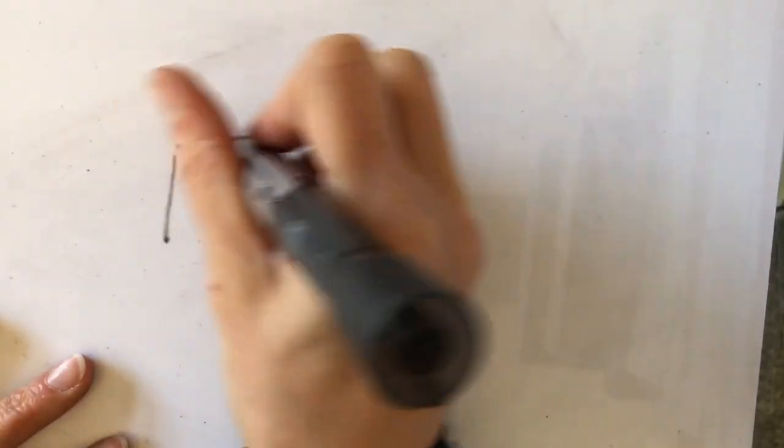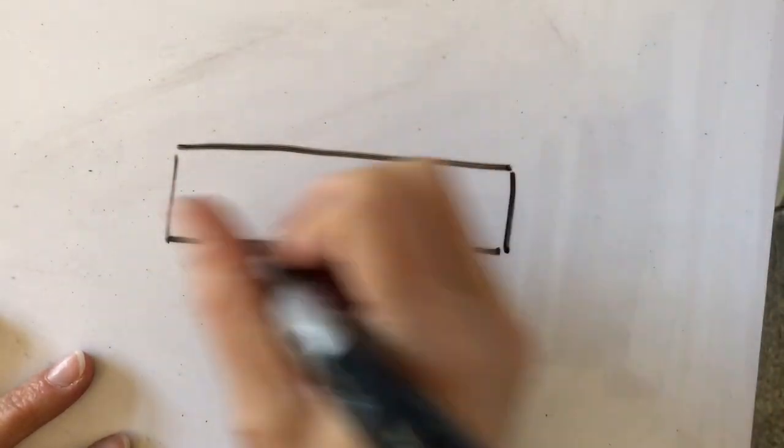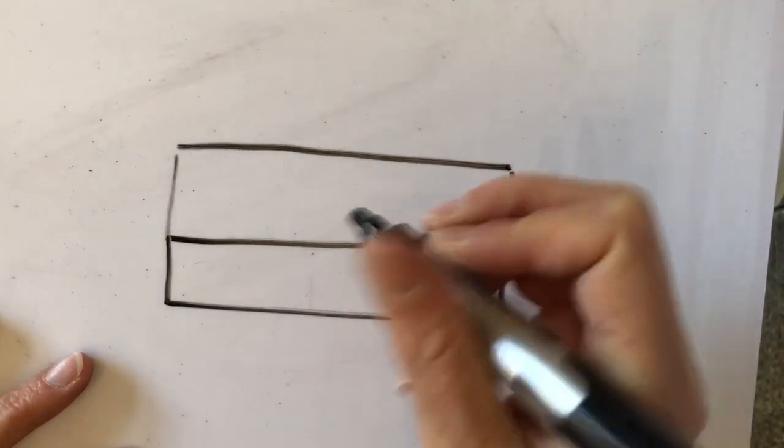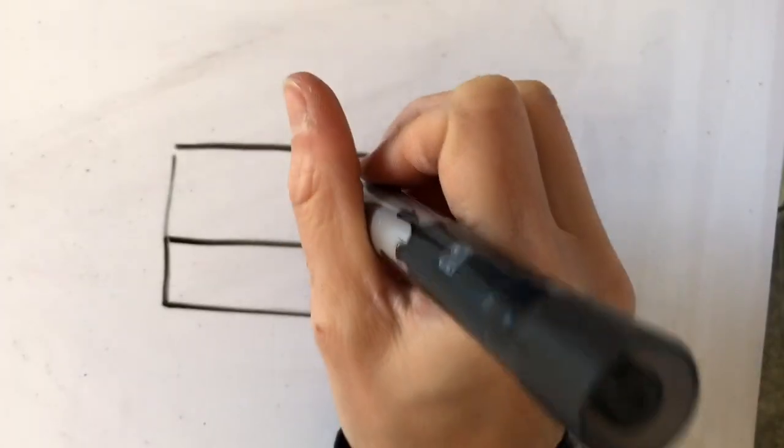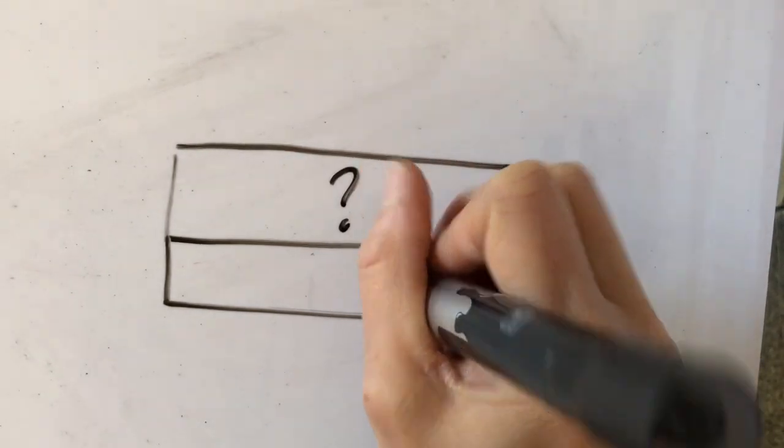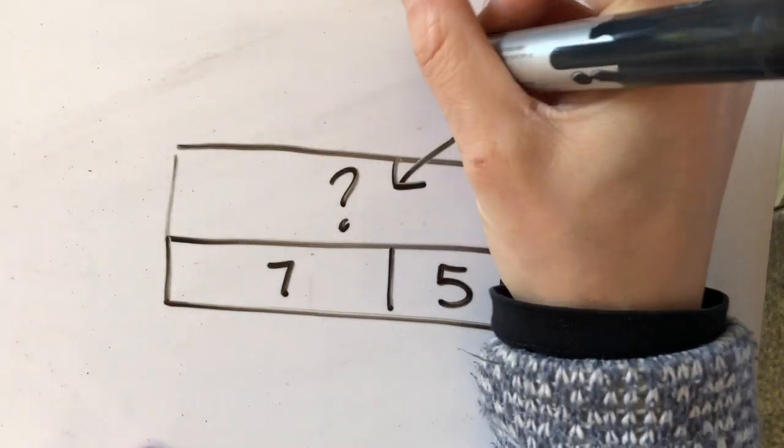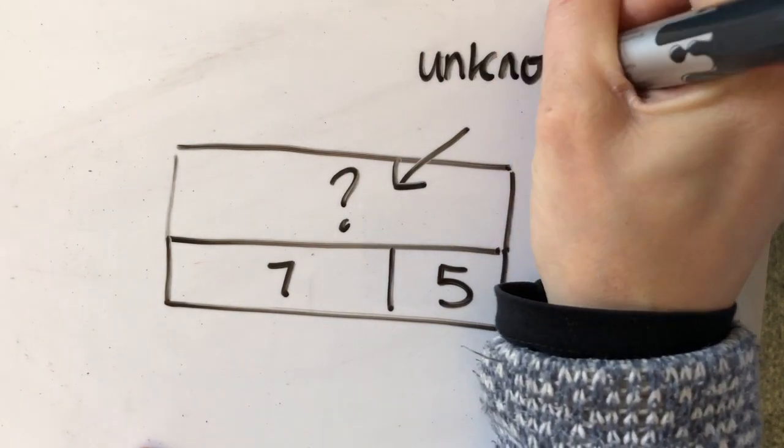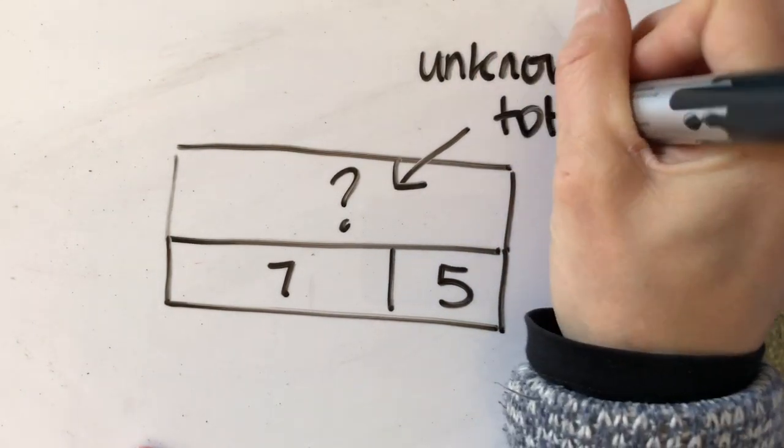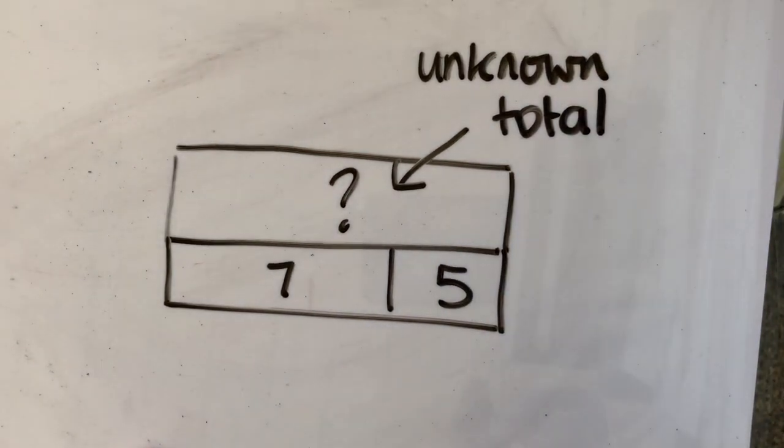So, a bar model, as you've seen in the previous videos, you have two bars. If I don't know what this value is, but I know that this number is 5 and this one is 7.